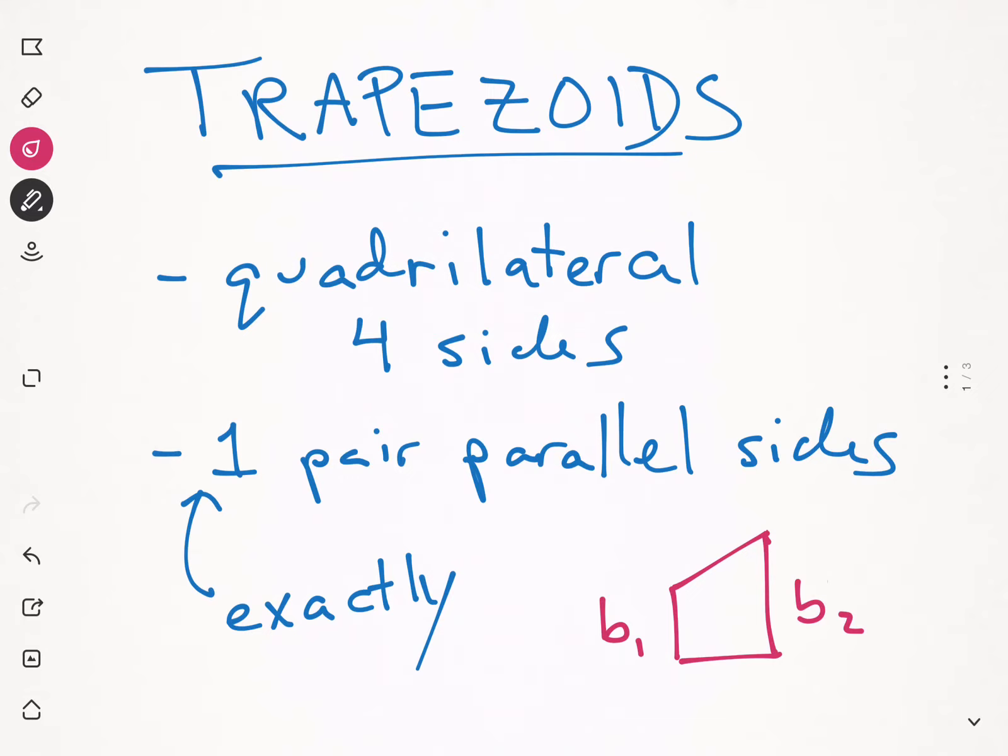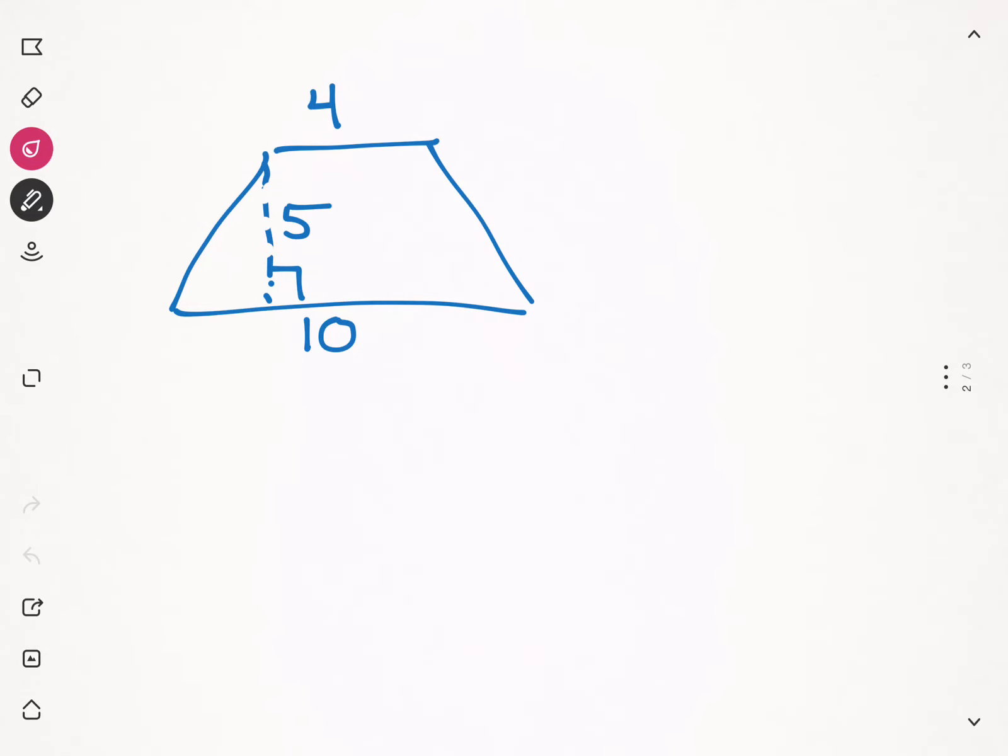So we're going to look at how to find the area of a trapezoid. So here's our first example. Libby, what is the length of base one, or one of the bases? There's four. Four. And what is the length of the other base? Ten. And what is the height? The height is five. Five.